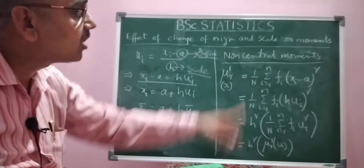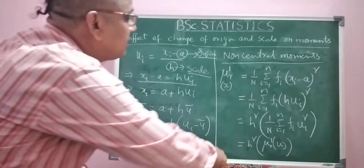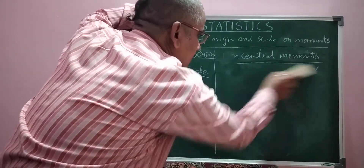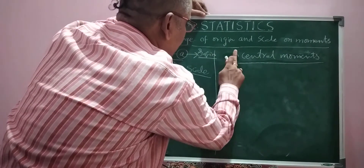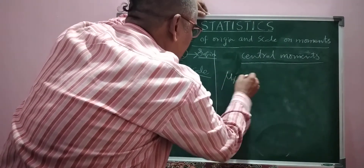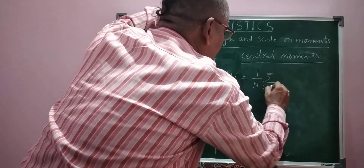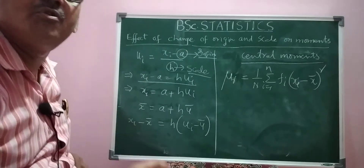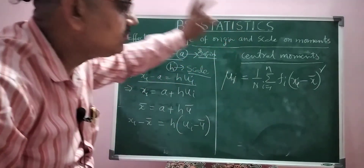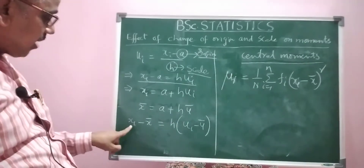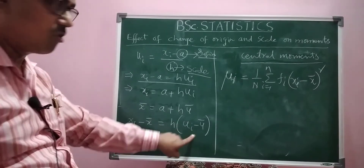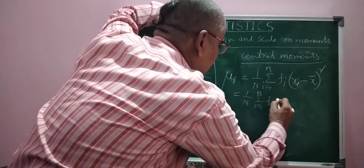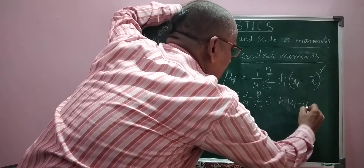This is the concept for non-central moments. Now for central moments — the formula for μ_r is: 1 by N, summation i equals 1 to n, f_i into (x_i minus x̄) to the power r. Substituting x_i minus x̄ equals h times (u_i minus ū), we get 1 by N, summation f_i into (h·(u_i minus ū)) to the power r.